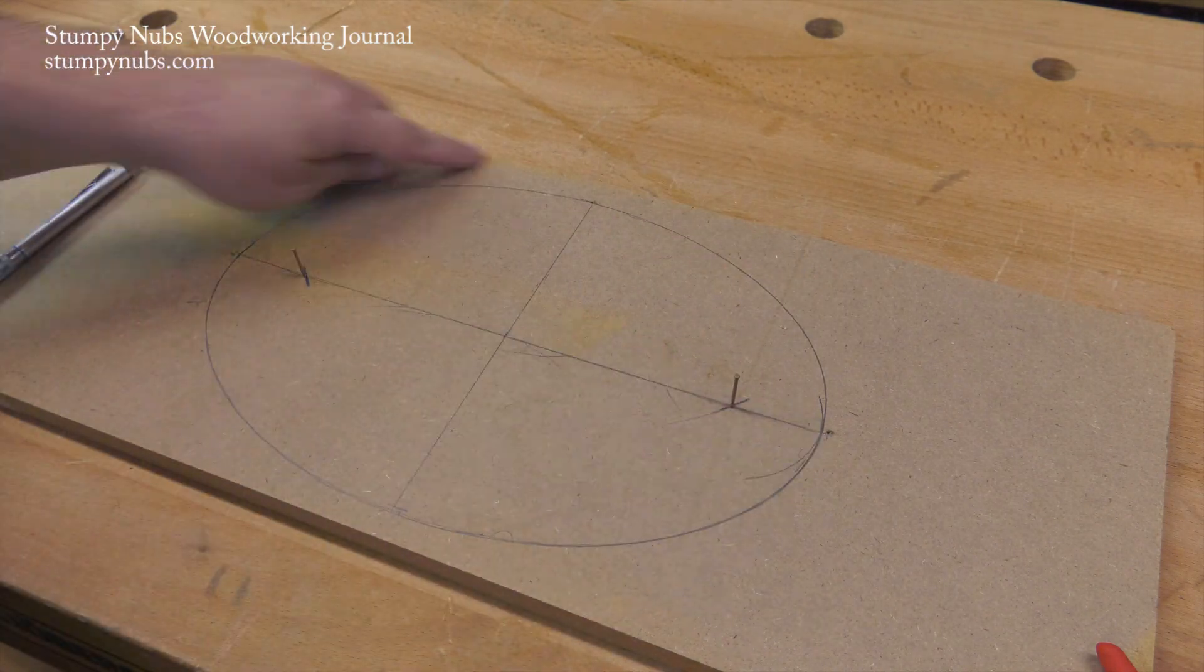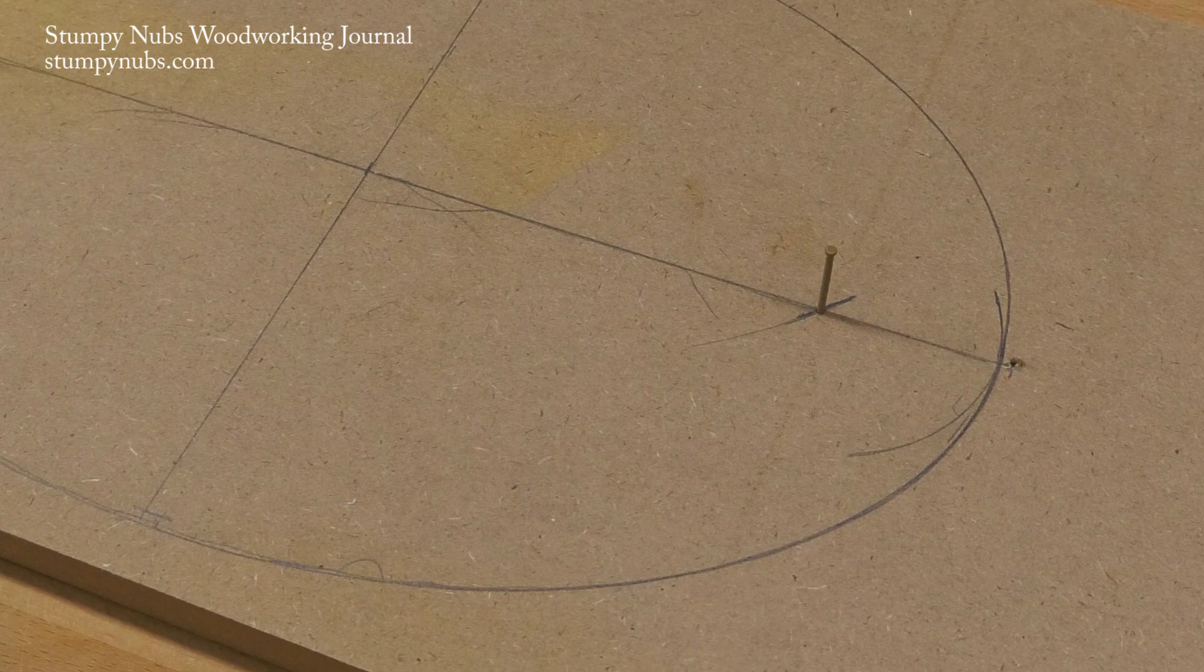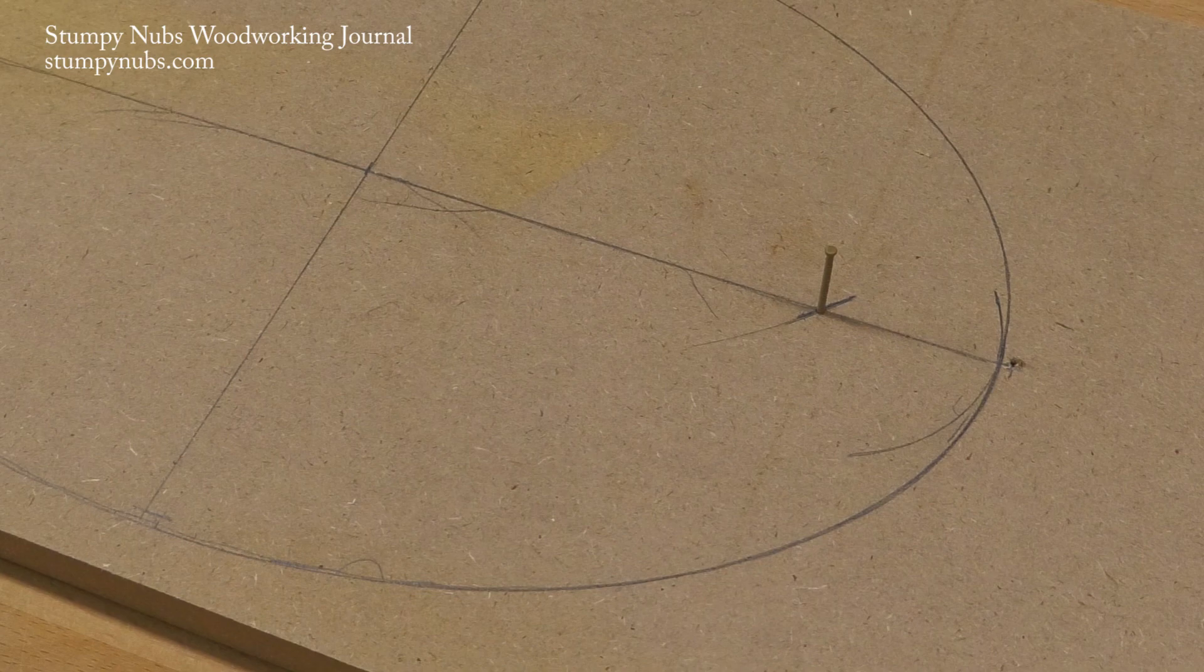See how I missed my marks on the right and on the bottom? My ellipse is going to be a little bit narrower and a little taller than I originally wanted.